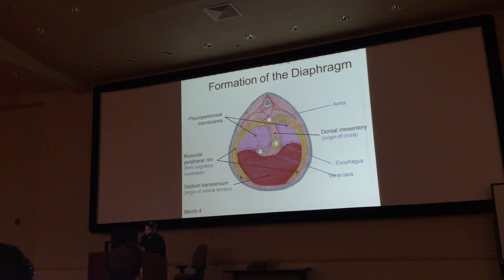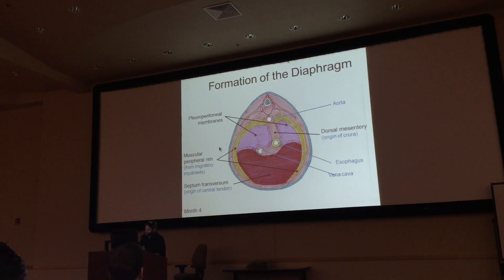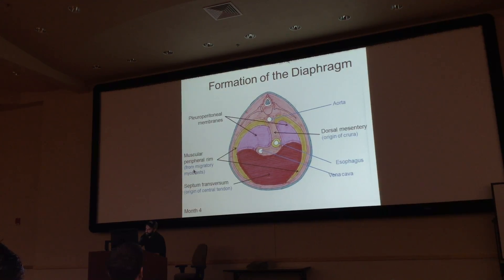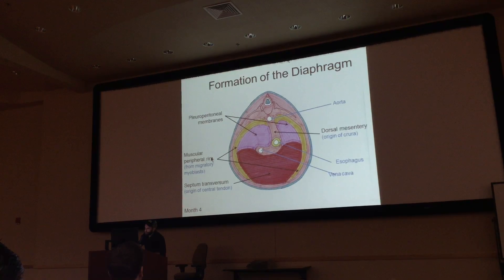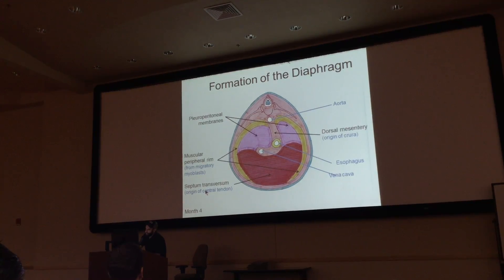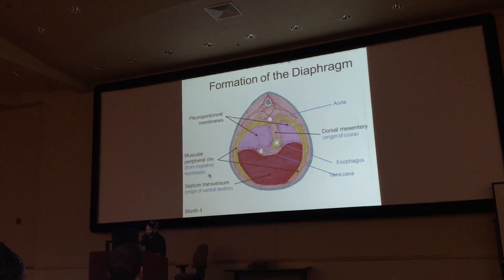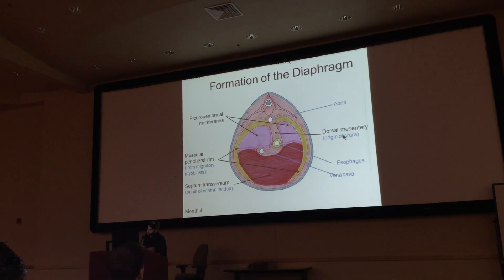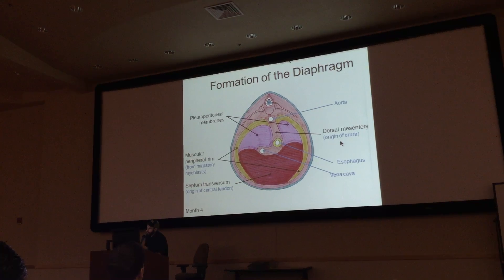In the last stage of diaphragm formation, pleuroperitoneal membranes are fused and structures start to differentiate. You have a muscular peripheral rim from migratory myoblasts. He could ask where your central tendon came from — septum transversum — or where the muscular peripheral rim came from — migratory myoblasts. The dorsal mesentery was the origin of your crura.